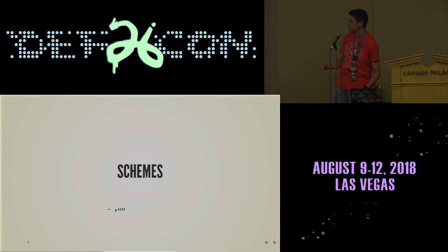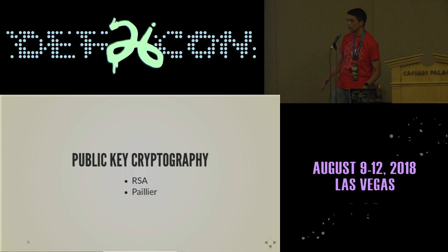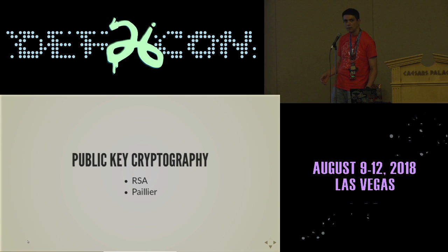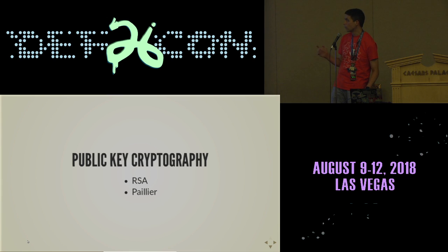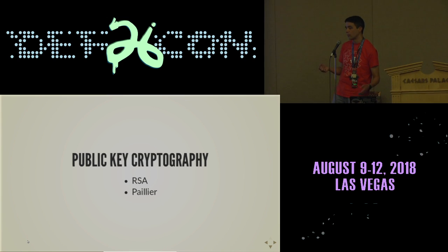Now we're going to get into what they call schemes. The first being public key cryptography — we've got RSA and Paillier. How many of you are familiar with Paillier? Paillier uses an RSA group but has a neat property that the private key trapdoors discrete log. So you can have an additively homomorphic scheme and actually get back what the exponent is.